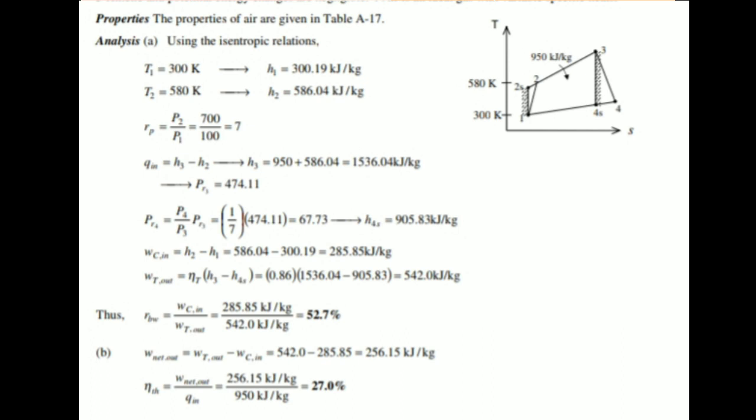H2 minus H1 is equal to 586.04 minus 300.19, equals 285.85 kilojoules per kilogram. And H3 minus H4 is equal to 0.86 times 1536.04 minus 905.83, which gives us 542.0 kilojoules per kilogram.